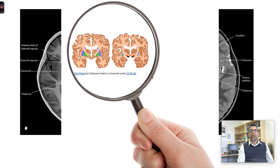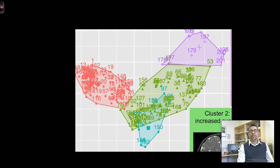Our study included children with bilateral basal ganglia changes already present on MRI and then attempted differentiation based on patterns seen in other brain regions. On cluster analysis, we found that our cohort of 201 patients segregated into four different groups based on changes in different brain regions.